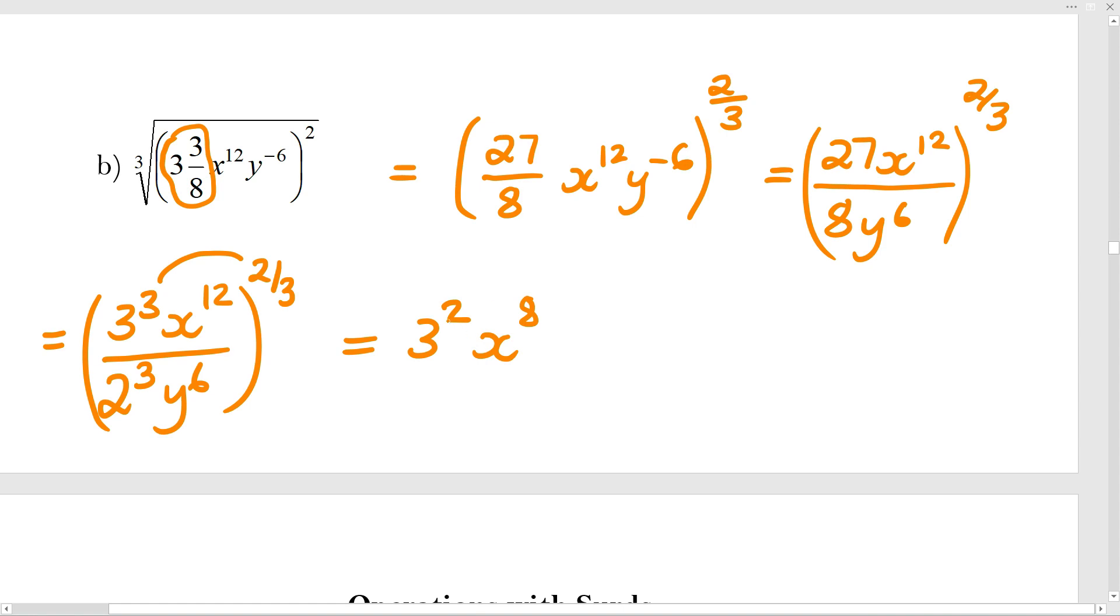I recommend doing these little steps on the calculator. I can do 2/3 times 12 in my head, but if I was writing a test I would do it on a calculator. At the bottom I've got 2 to the power of 3 times 2/3, which is also 2, and I've got y to the power of 6 times 2/3, which is 4. I'm almost done. Because these are powers of 2, I need to work them out fully: 3^2 is 9, so it's 9x^8 over 4y^4.